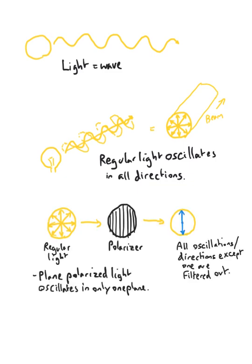If we use a polarizer, i.e. something that only lets waves in a specific direction pass through, we can filter out everything else so that all oscillations except one are filtered out. Plane polarized light oscillates in only one plane or in one direction.